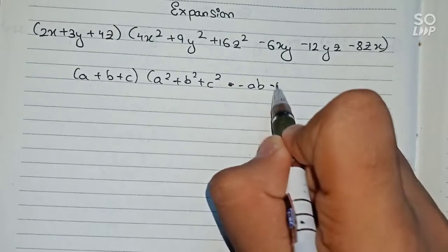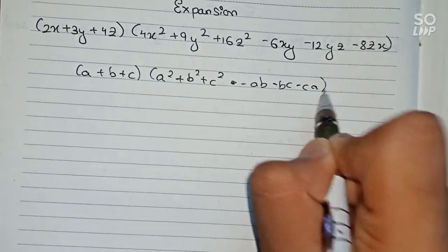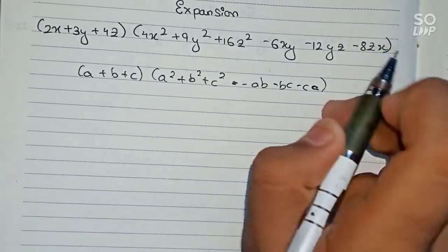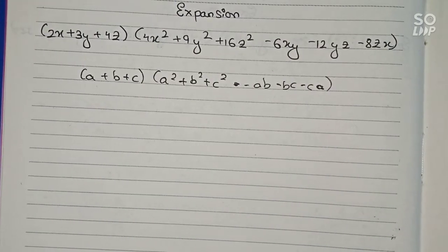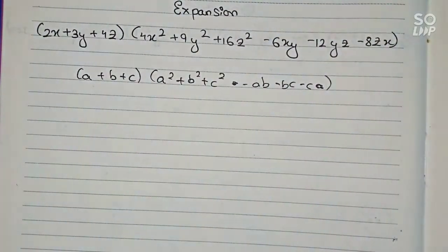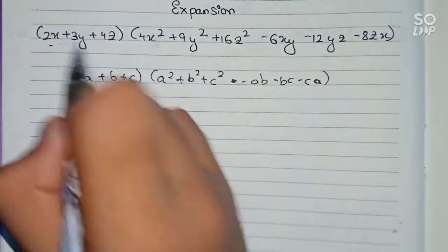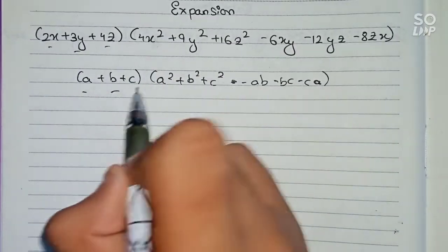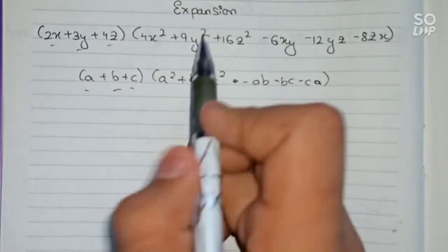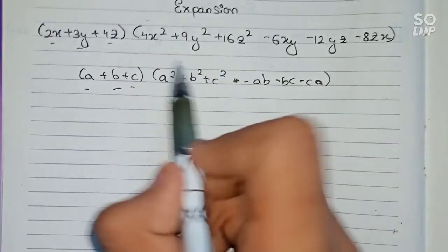minus ab minus bc minus ca). Now we will check if this question is in this format or not. First, 2x will be our a, 3y will be b, and 4z will be c. Now we have to check this portion.